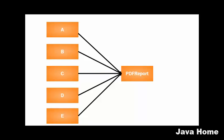For example, on the screen we see a PDF report class which generates a PDF report. There are a few classes which depend on PDF report — class A, class B, class C, class D, and class E. The PDF report class has implementation details like how to generate the PDF, and those implementation details are directly given to the outside world — classes A, B, C, D, and E. Here there is no abstraction because we are not hiding the implementation; we are presenting the implementation details to the outside system.